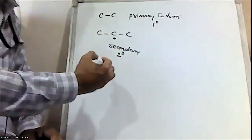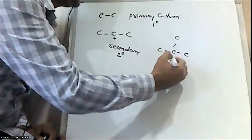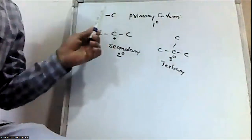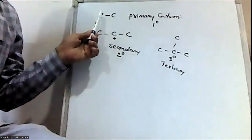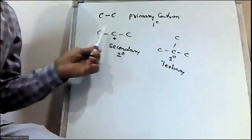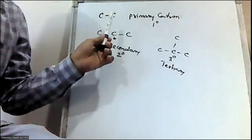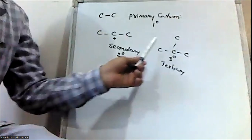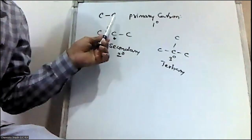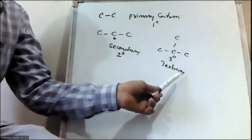Carbon which is attached to three other carbons is called tertiary carbon. So, primary carbon means a carbon attached only to one carbon. If carbon is attached to two other carbons, it is called secondary carbon. If carbon is attached to three other carbons, it is called tertiary carbon.